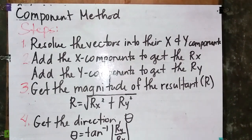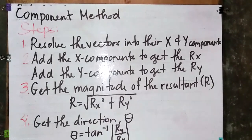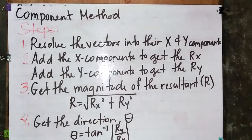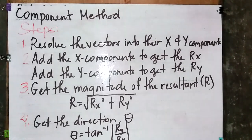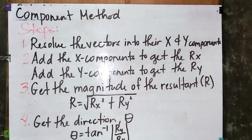Our last method in analytical method is about the component method. The component method is appropriate for adding two or more vectors that do not coincide with the x and y axis. In other words, we are breaking up the vector into its components, which are along the horizontal or x-axis and along the vertical or y-axis.